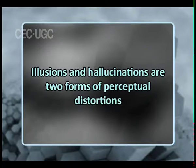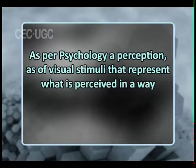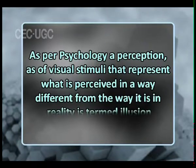Illusions and hallucinations are two forms of perceptual distortions that seriously affect an individual's interpretation of reality. First, illusion: as per psychology, a perception of visual stimuli that represents what is perceived in a way different from the way it is in reality is termed an illusion. Illusions are sensations that are either misinterpreted by the individual or formed into inaccurate perceptions. An illusion is a distortion of the senses revealing how the brain normally organizes and interprets sensory stimulation.